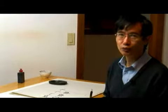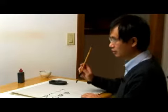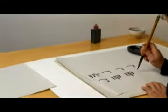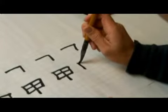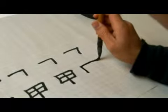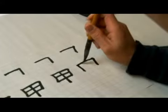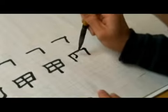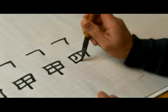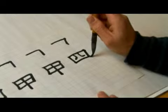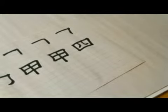We just did the character jia, which means 'first' in English, and now we're going to write the Chinese character four — si. So the jia stroke is over there. Si.